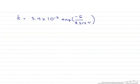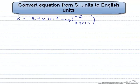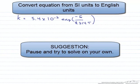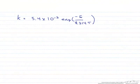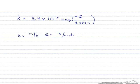The Arrhenius equation as shown here is used to find a rate constant as a function of temperature. In this screencast we will take this equation that is currently in SI units and change it into English units. Here our k is in meters per second, our E is in joules per mole, and our T is in Kelvin.